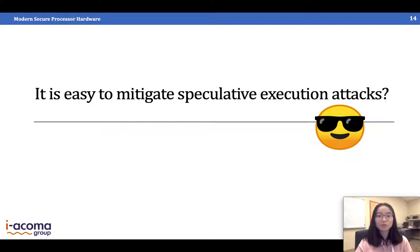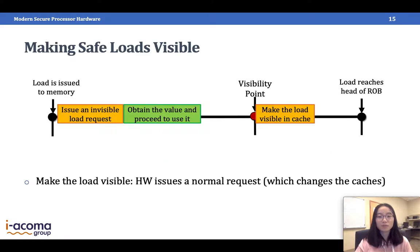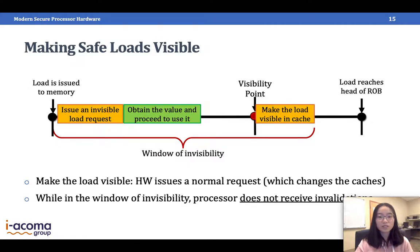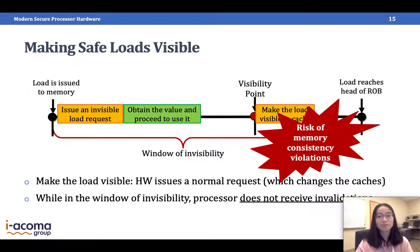It might seem easy to mitigate speculative execution attacks this way. However, we cause a serious problem: after the invisible load request and before the second normal load completes — the window of invisibility — the processor cannot receive invalidations for that cache line. This can cause memory consistency violations. In the next few slides I will describe why this consistency violation occurs and how to solve it.